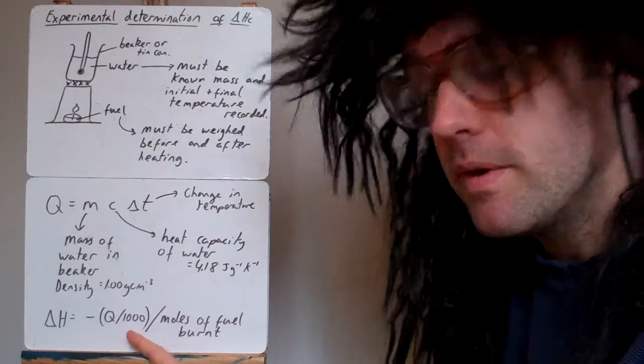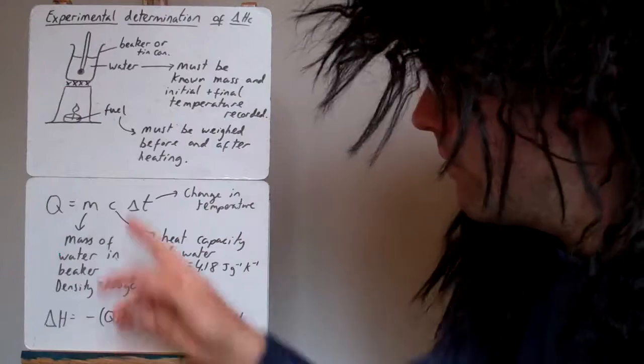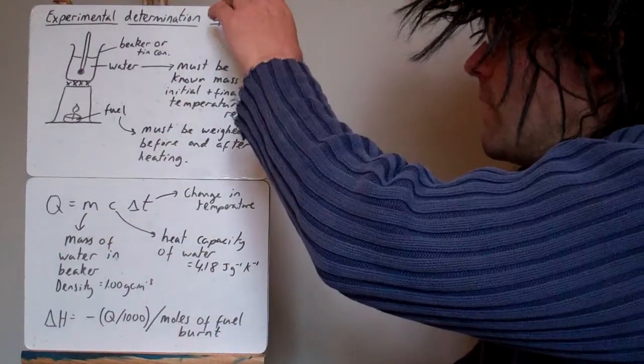We just take that Q, divide it by 1000 and put it into kilojoules and divide it by the number of moles of fuel burnt. Let's have a look at an example.